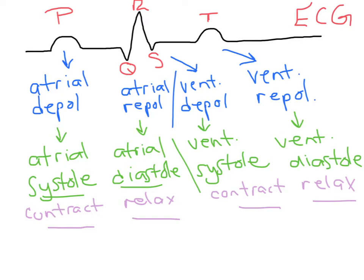Looking at the atria and ventricle, we start the whole cardiac cycle with atrial contraction — atrial systole first — where the atria contracts and then relaxes. At the same time the atria is relaxing, the ventricle is contracting, and then the ventricle relaxes.